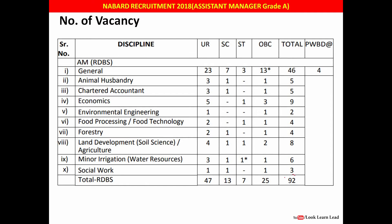There are 92 vacancies in total, out of which 46 are for the Generalist post. The remaining vacancies are divided by discipline: Animal Husbandry 5, Economics 9, Environmental Engineering 2, and others similarly distributed. In terms of reservation: 47 vacancies for Unreserved, 25 for OBC, and 13 plus 7 for SC/ST candidates.